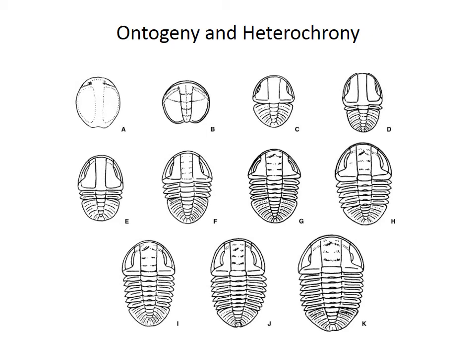This lecture covers ontogeny, which is shape change during growth from the juvenile to the adult form, as well as heterochrony, which is an evolutionary process related to changes in the rate, timing, or duration of ontogenetic shape change. Morphological change during ontogeny, such as shown in the trilobite pictures on this slide, is extremely common. I'll introduce some terminology describing the trajectory of morphological change during ontogeny, and then describe how shifts in that ontogenetic change can lead to different types of heterochrony.